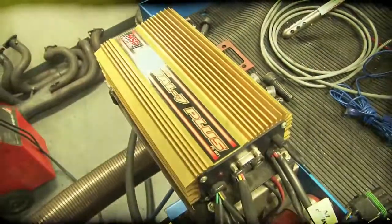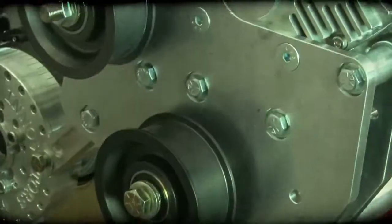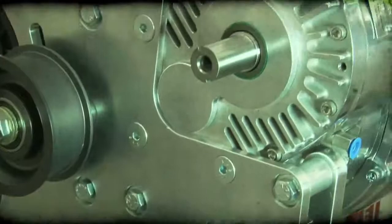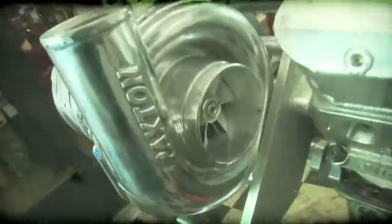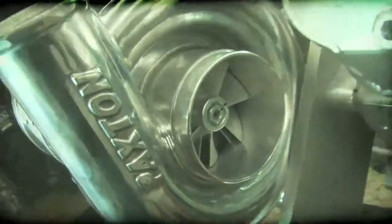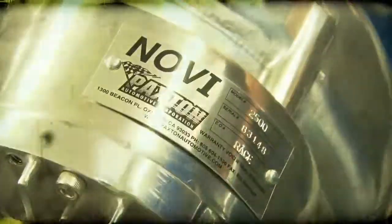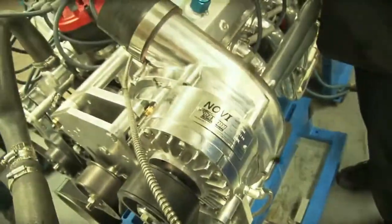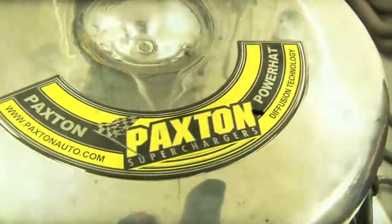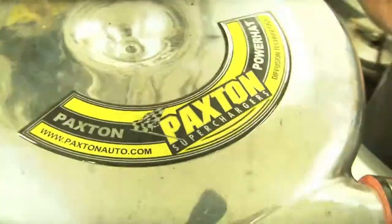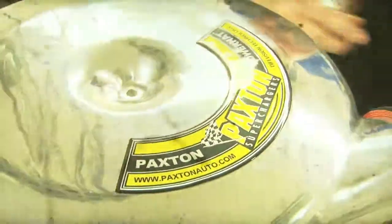This setup will deliver all the power we need to make over 1,000 horsepower. For our power adder, we turn to Paxton and their all-new Novi 2500 Supercharger. It features a redesigned compressor wheel that allows it to produce over 1,300 horsepower and 30 psi of boost. The supercharger feeds Paxton's new power hat, which has been engineered to distribute air evenly across the top of the carburetor.